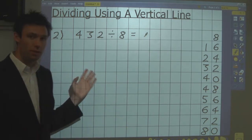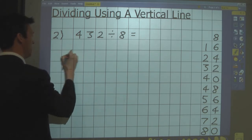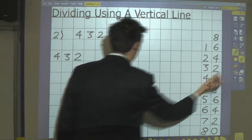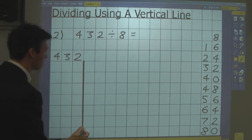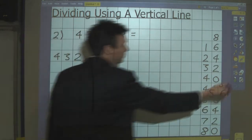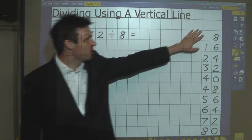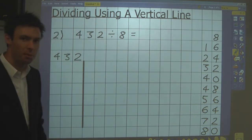So how do you divide using a vertical number line? We start by writing the first number, so 432 in this case, and we draw our number line vertically this time. And because we're dividing by 8, we write our 8 times table down the right-hand side of the page for reference to help us solve the calculation.